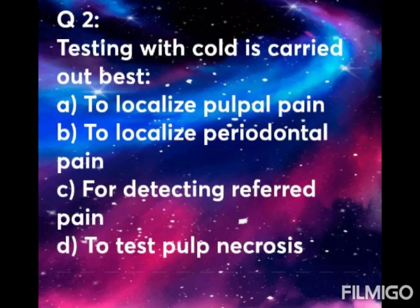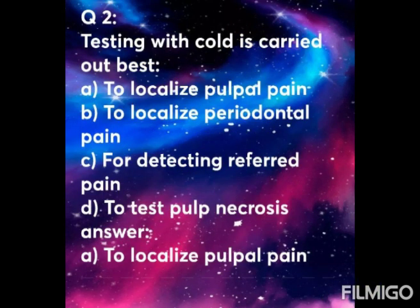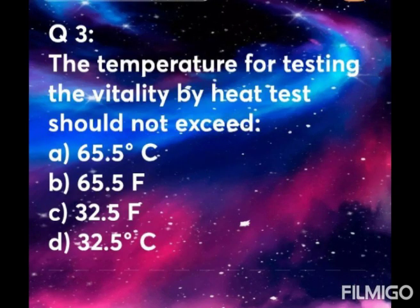Question 2: Testing with cold is carried out best — Option A: to localize pulpal pain. Option B: to localize periodontal pain. Option C: for detecting referred pain. Option D: to test pulp necrosis. The answer is Option A — to localize pulpal pain. Cold testing is mainly used for differentiating between reversible and irreversible pulpitis.